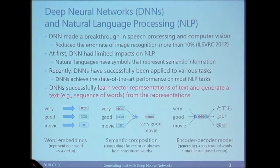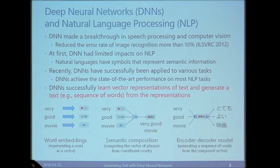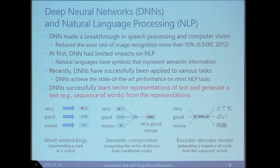Let me explain the current situation of deep learning in NLP. Deep neural networks made a breakthrough in computer vision a few years ago. DNN reduced the error rate of image recognition by more than 10% in 2012. At first, DNN had limited impact on NLP because, unlike computer vision, natural language has explicit symbols that represent semantic information. Recently, DNN has successfully been applied to NLP, achieving state-of-the-art performance on most tasks.